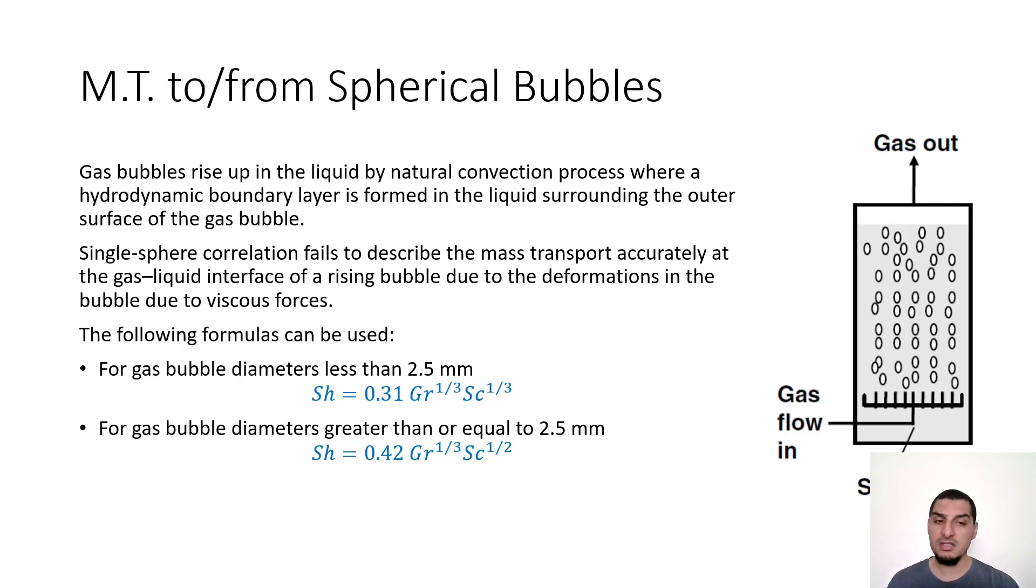So in case you have mass transfer from a bubble or to a bubble, since it's a bubble, then by definition it's in motion, it's going up. And the motion is natural convection motion, or the convection here is going to be natural convection because it's due to the difference in densities.